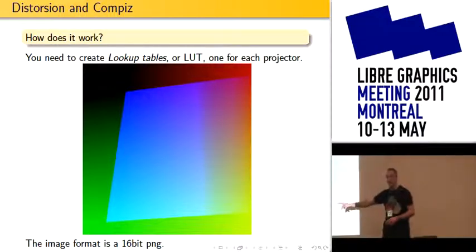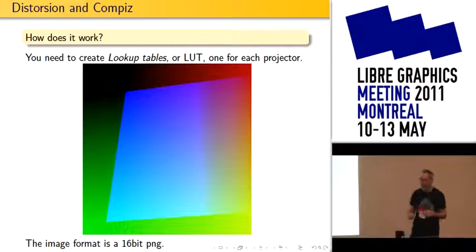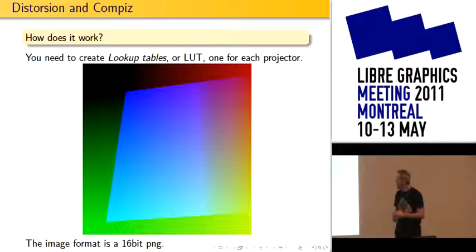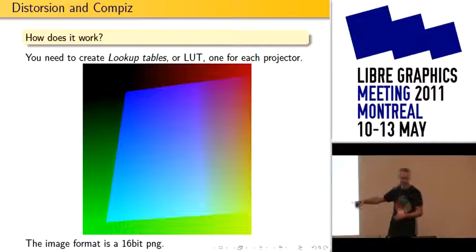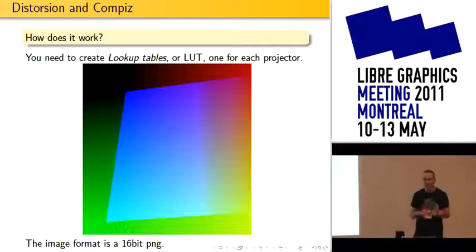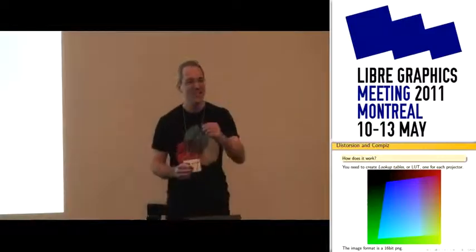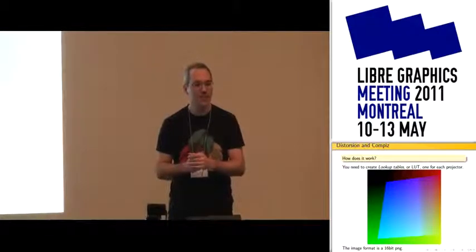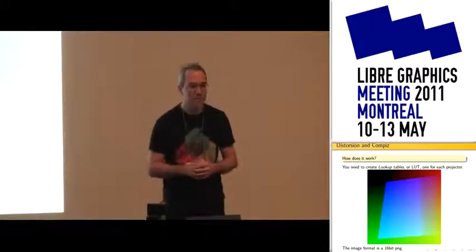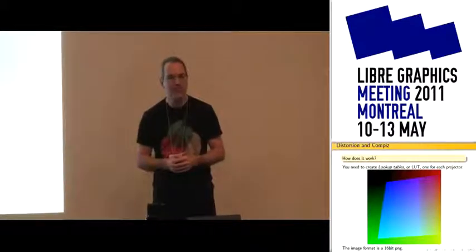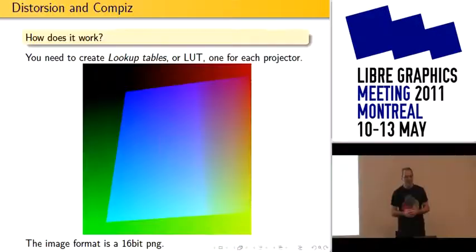A word about the 16-bit PNG: if you want to edit the image, you need to use Krita, which works really well. Krita now preserves the text tags in a PNG file, which is important because we hide a lot of information in the text tags of the PNG files. We also store brush presets in PNG files — we rename them to KPP — and use that part of the file to store data.